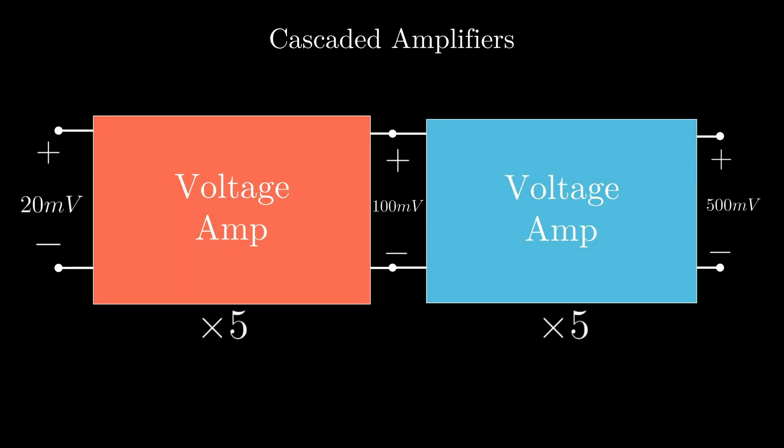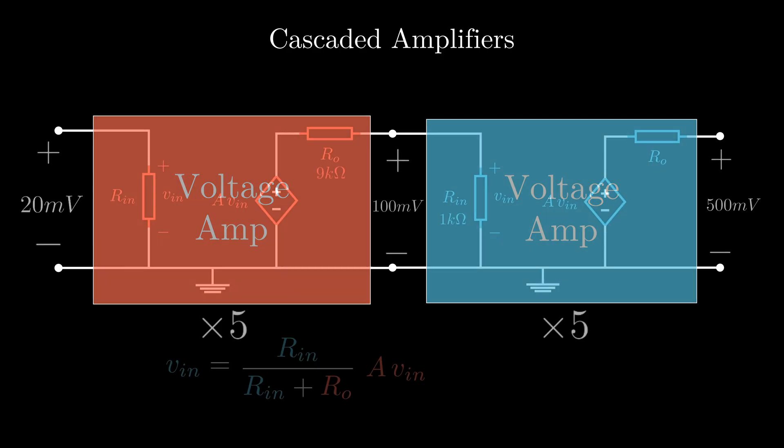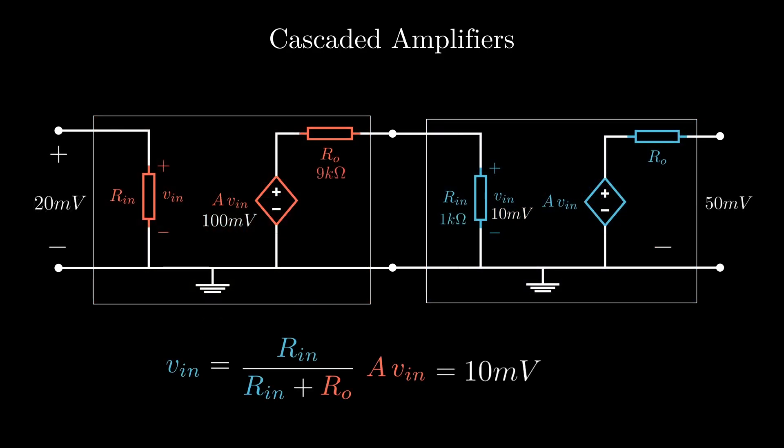Remember, ideally, we needed 500 millivolts at the output. But we just have 50 millivolts, just 10% of the desired output.